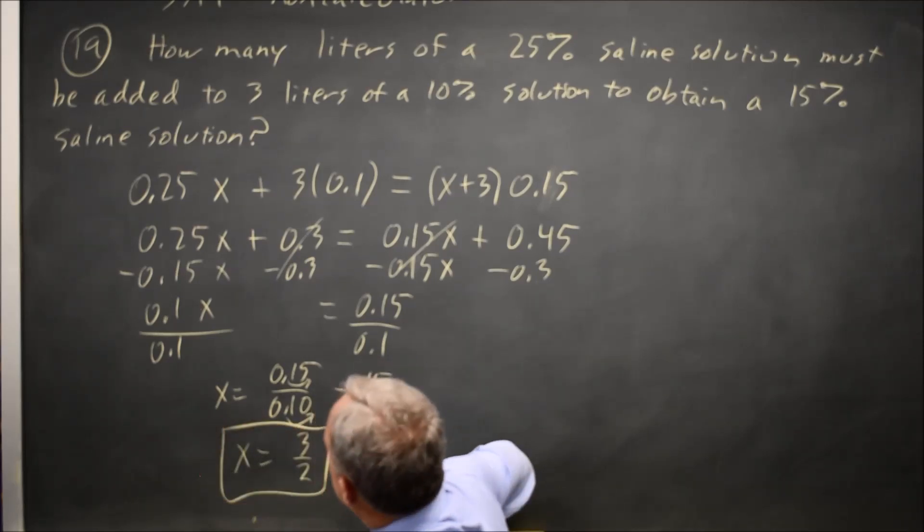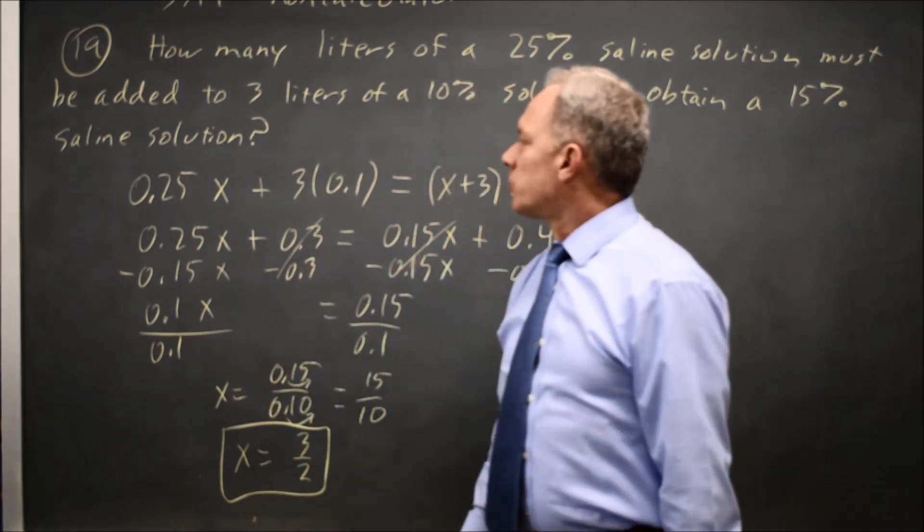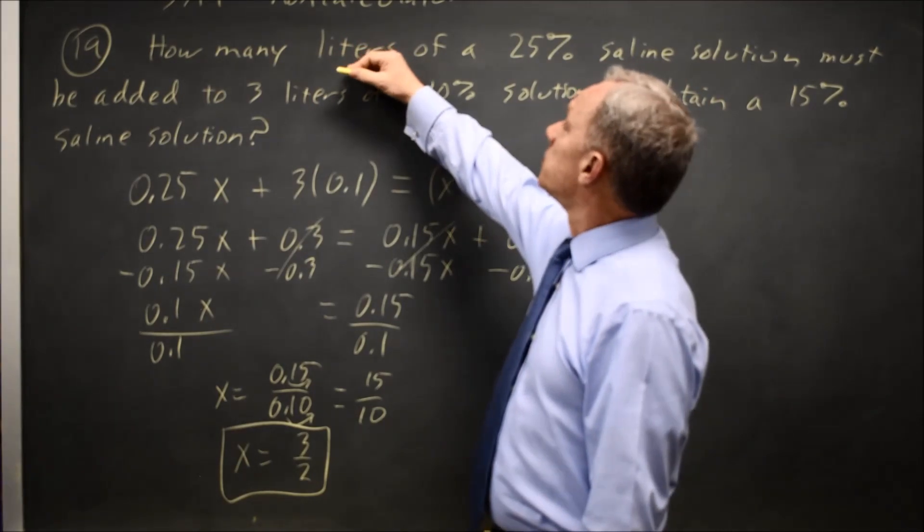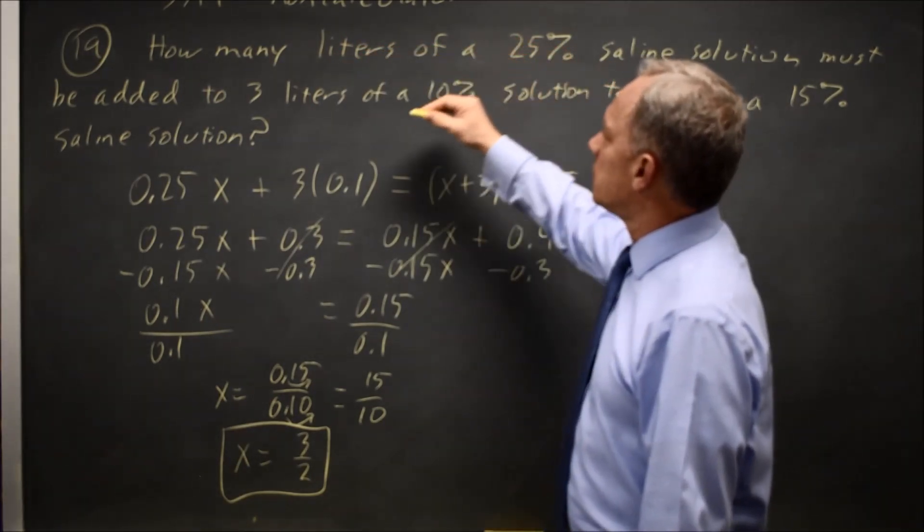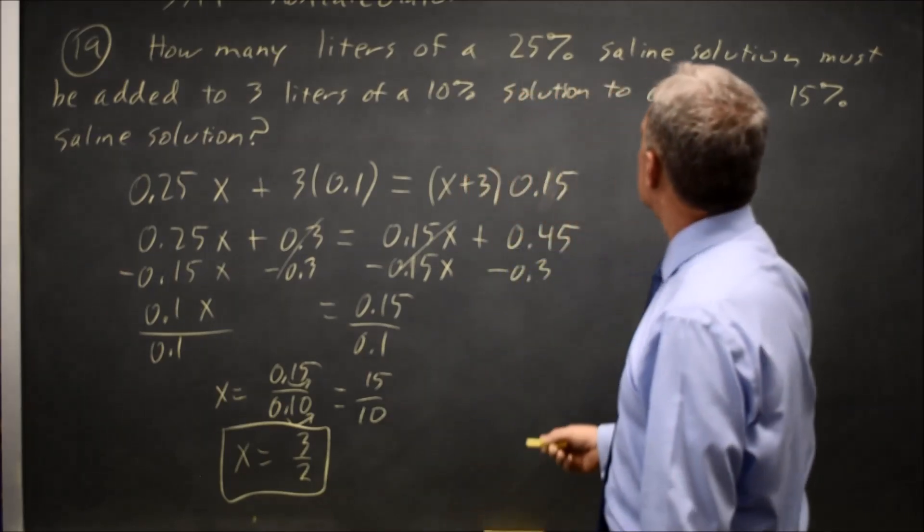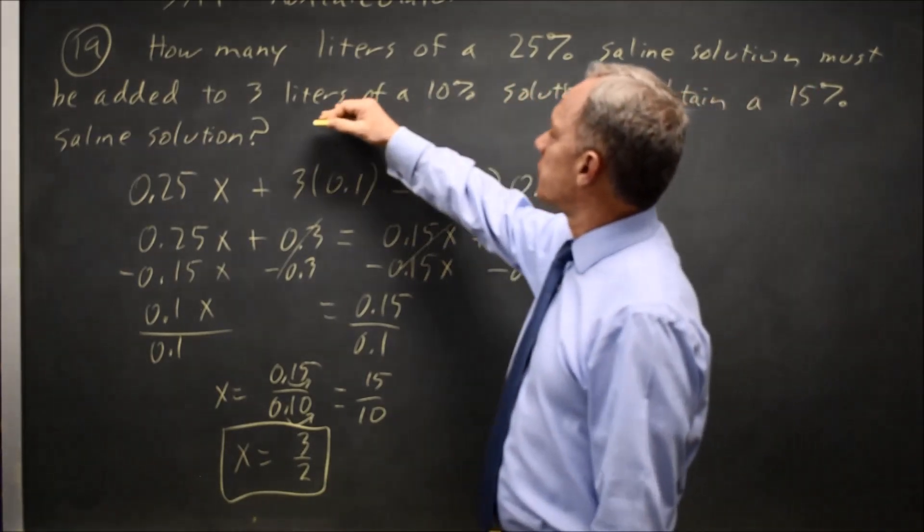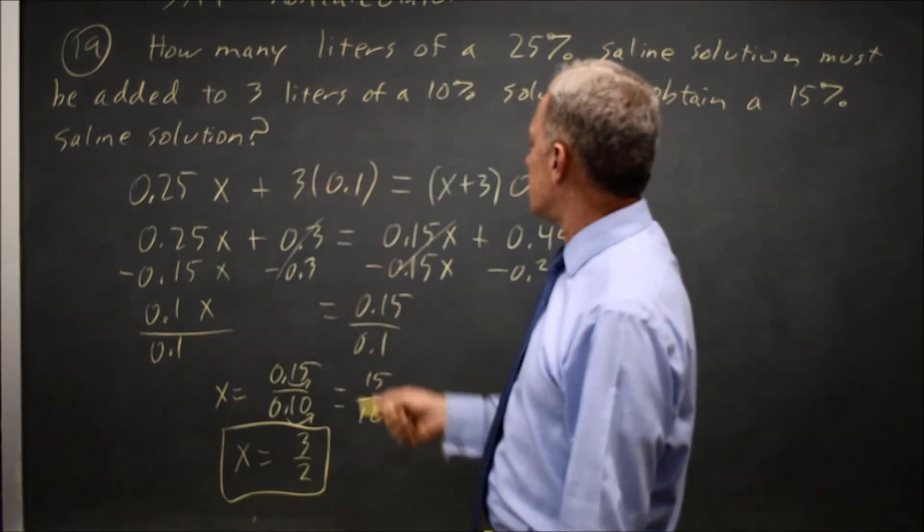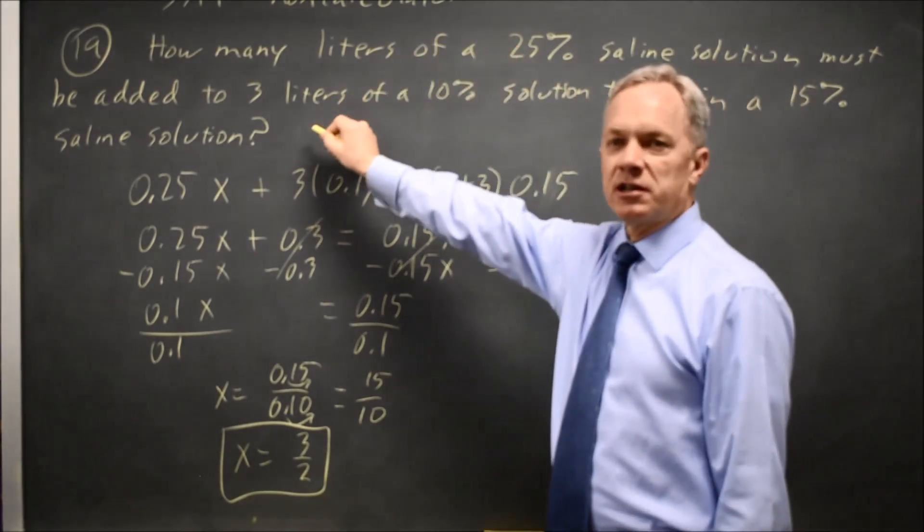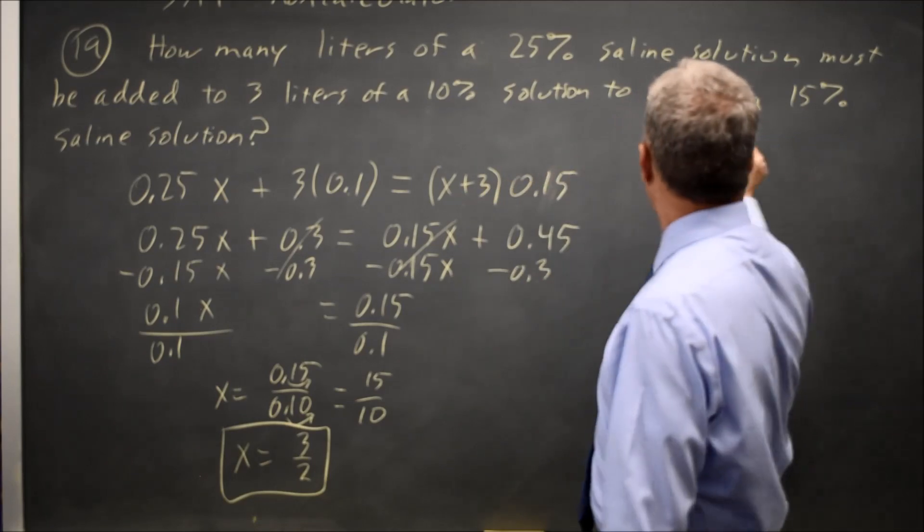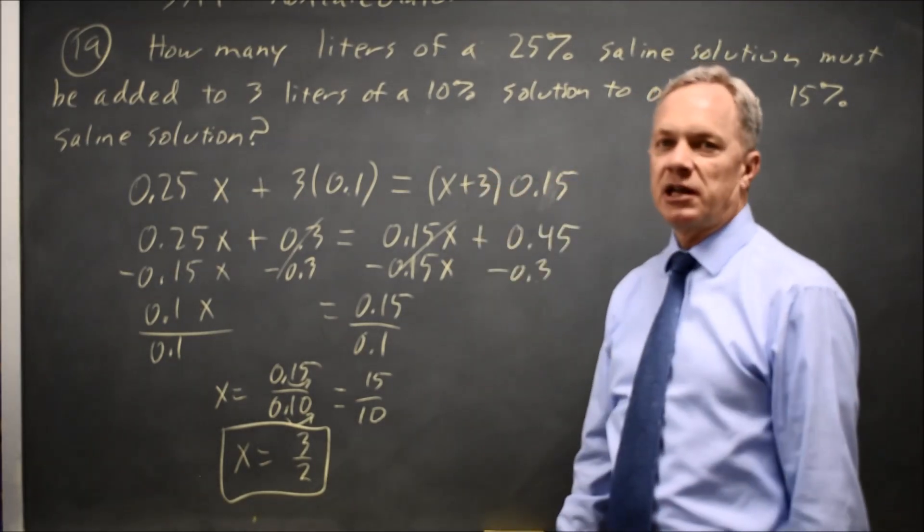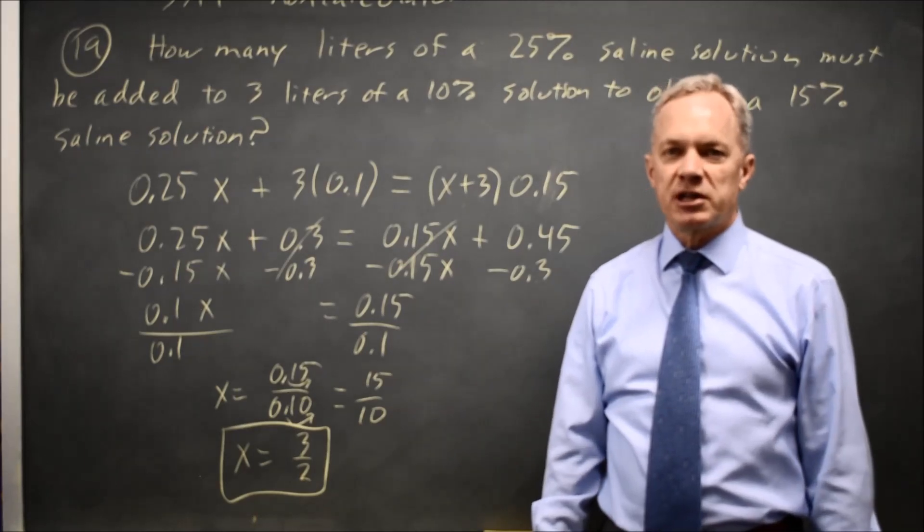So I would grid in 3 over 2. Writing the equation is probably the hardest step, but since they say how many liters of 25%, that is x, where x is how many liters, times 0.25, added to 3 liters of 10%, so that's 3 times 0.1. And since I have x liters here and 3 more liters here, that's a total of x plus 3 liters, and it's a 15% solution, so it's 0.15 times the quantity x plus 3. Hopefully that makes sense.